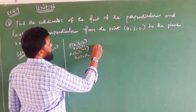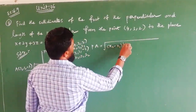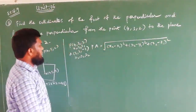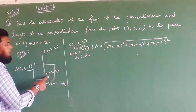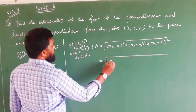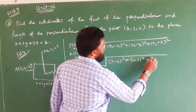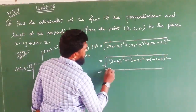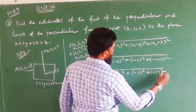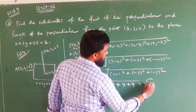Now for the length of the perpendicular, using the distance formula: root of (x2 minus x1) squared plus (y2 minus y1) squared plus (z2 minus z1) squared. The differences are (4 minus 3), (3 minus 1), (2 minus minus 1), giving root of (minus 1) squared plus (minus 2) squared plus (minus 3) squared, which equals root of 1 plus 4 plus 9, equal to root 14 units.